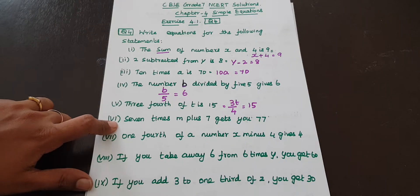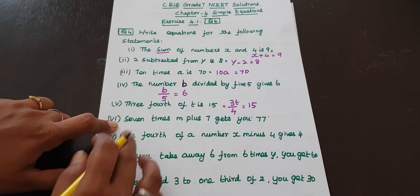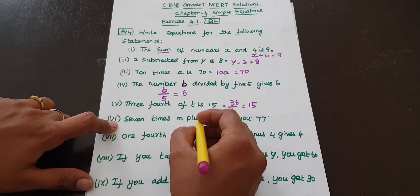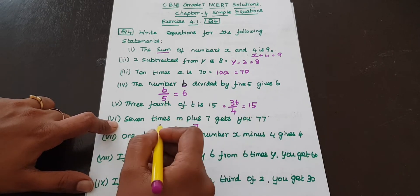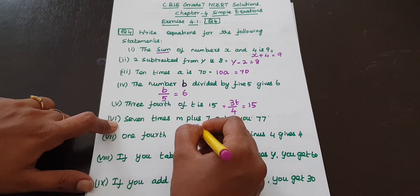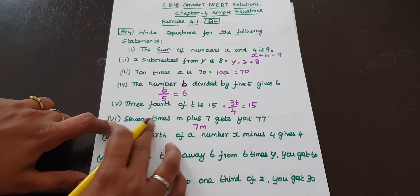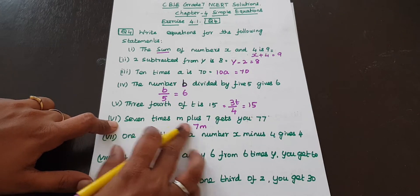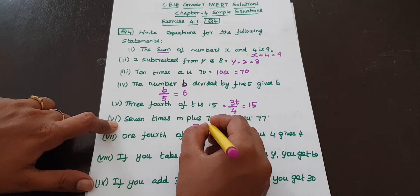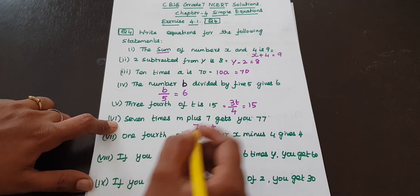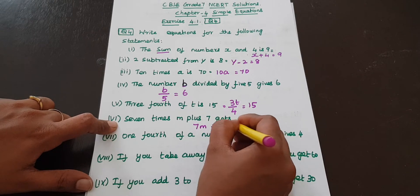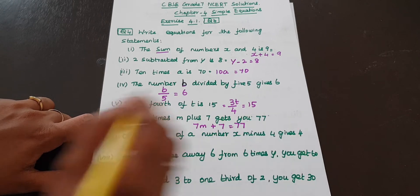Next: 7 times m plus 7 gives 77. Here 'times' is inside the expression, so 7m — that is 7 times m — plus 7 is equal to 77.